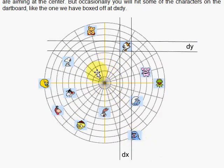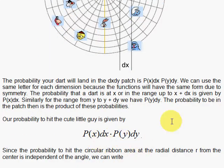Here we're off to play some darts. We're pretty good, we hit the center most of the time. However, we sometimes hit these folks here. What's the probability of hitting that little guy? The probability distribution in the x dimension is capital P of x, and in the y dimension is capital P of y. The probability of being in this strip is P(x) times dx, and in this strip is P(y) times dy. The probability of being in both strips is given by the product of the two probabilities.